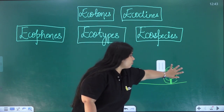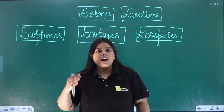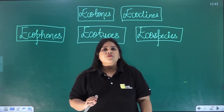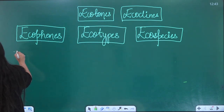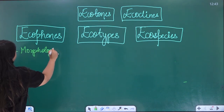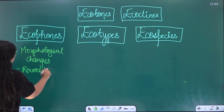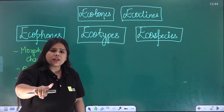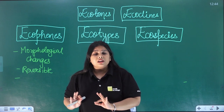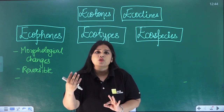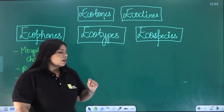We are talking about morphology — morphological changes. Is this fixed at the genetic level? No! It is a reversible change — morphological and reversible. What is phenotypic plasticity? When one single genotype under different environmental conditions creates different phenotypes, we call that phenotypic plasticity.